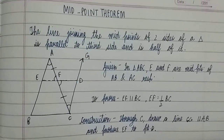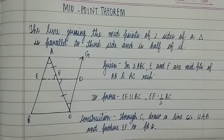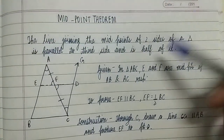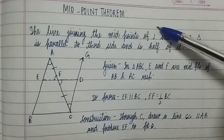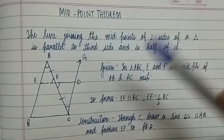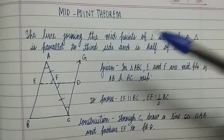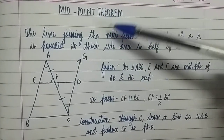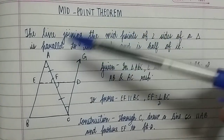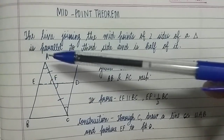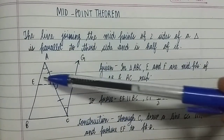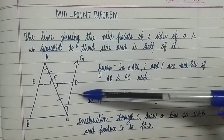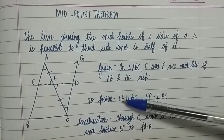Hey everyone, welcome to my channel Steady Junction. In this video we are going to see the Midpoint Theorem. It states that the line joining the midpoints of two sides of a triangle is parallel to the third side and is half of it. So if E and F are the midpoints of triangle ABC, then EF is parallel to BC and EF is half of BC.